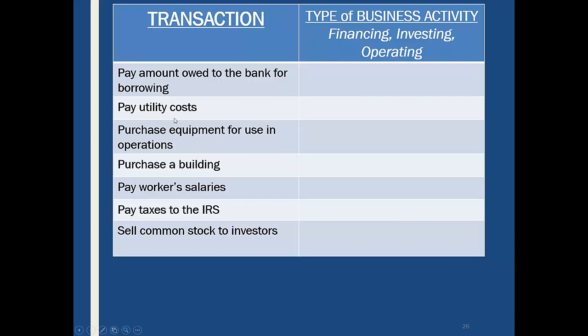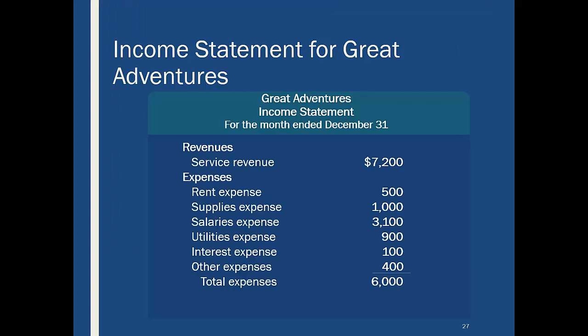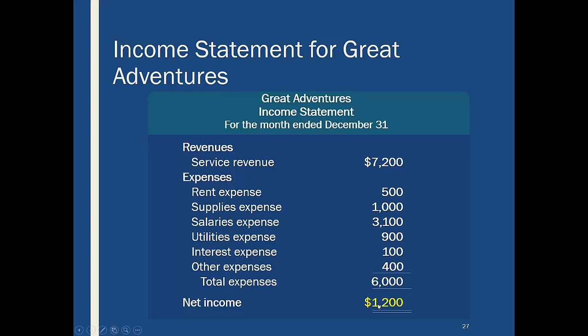For example, paying utility costs — what activity is that? If you said operating, you're right. Here's what an income statement might look like: here's the revenue, here are all the various expenses, there's the total expenses, and here's the net income. I hope that's positive — I hope revenue exceeds expenses. But sometimes that's not always true, and that's where life gets a little scary.